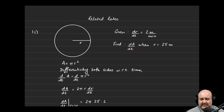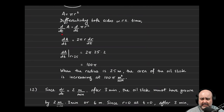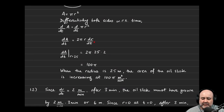If we're looking for dA/dt, we need to differentiate both sides with respect to time. Doing that, d/dt of A gives dA/dt equals the derivative of π times r² which is 2πr. Because r is a function of time implicitly defined, this is multiplied by dr/dt. We evaluate when r is 25: it's 2π times 25 times dr/dt which is 2, giving us 100π.